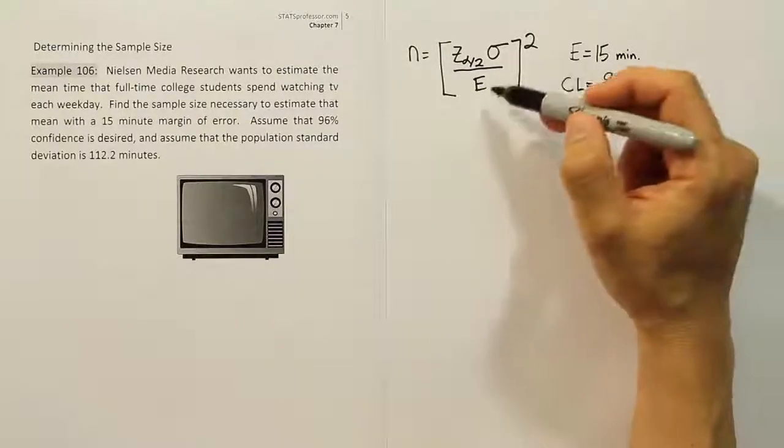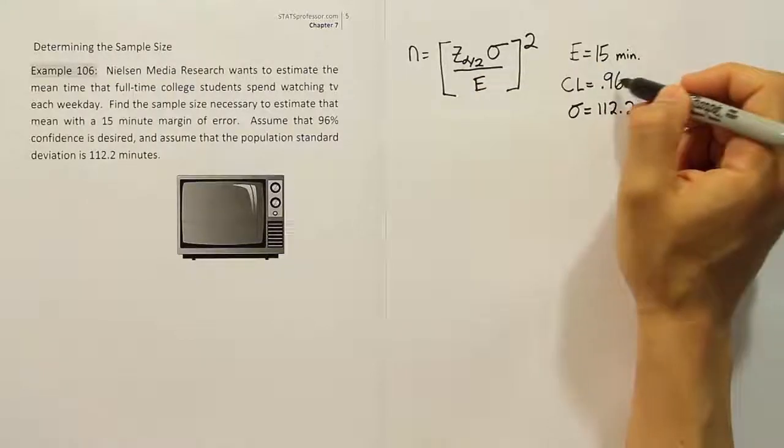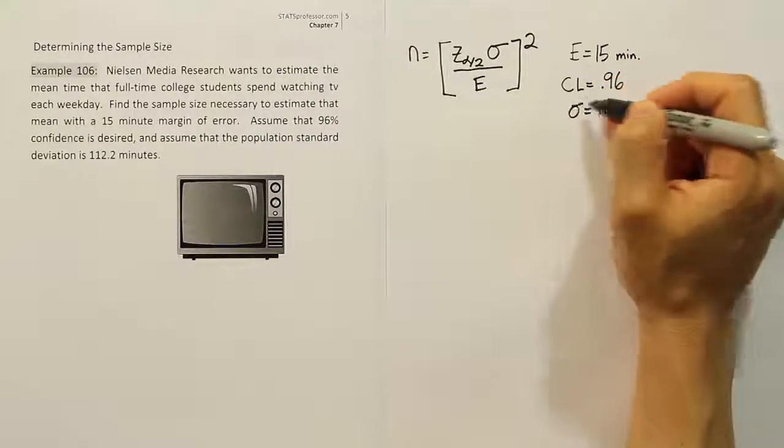The only thing missing from the formula is Z_α/2. We have E and σ, but we need to find Z_α/2 by looking at the confidence level. We'll go to the Z table to find the Z_α/2 value.